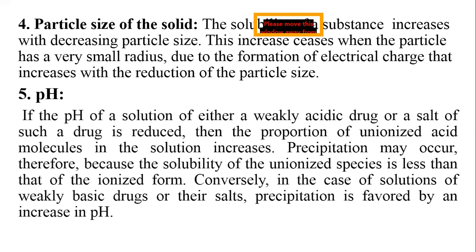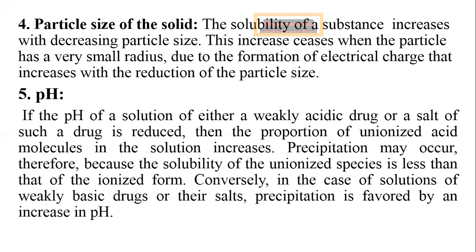The other factor is pH. If the pH of a solution of either a weak acidic drug or salt of such a drug is reduced, then the proportion of unionized acid molecules in the solution increases. Precipitation may occur because the solubility of the unionized species is less than that of the ionized form. Conversely, in case of solutions of weak basic drugs or their salts, precipitation is favored by an increase in pH. This effect is important as weakly acidic or basic drugs pass through the GIT tract, which experiences great changes in pH from 1 to 8.